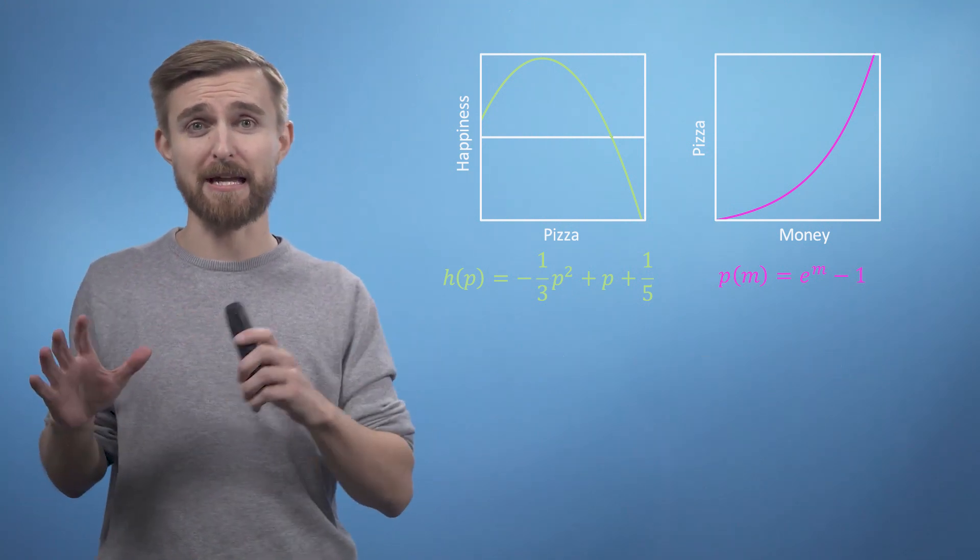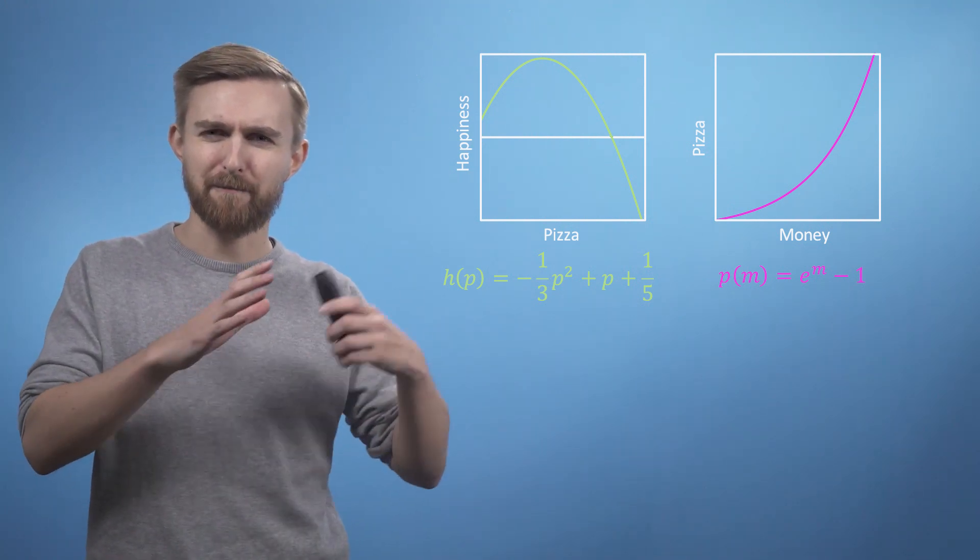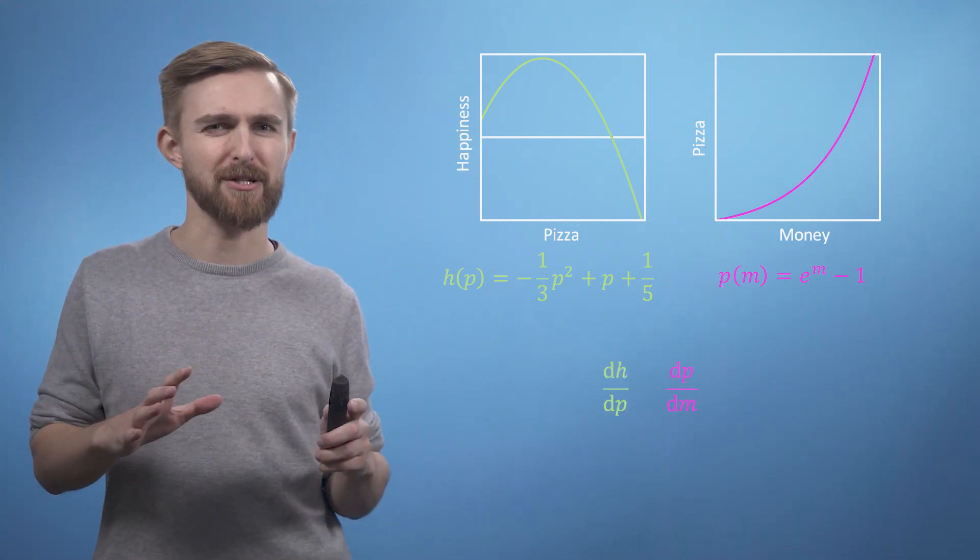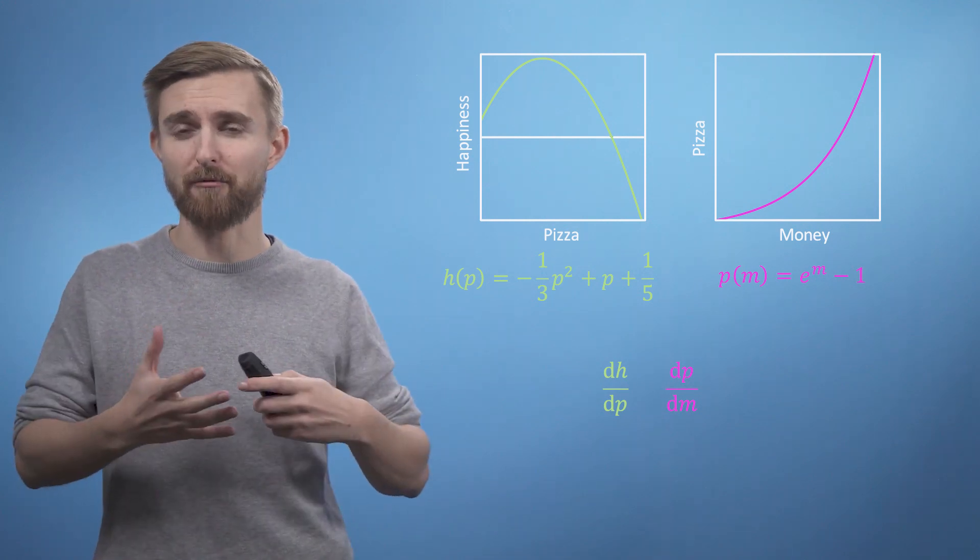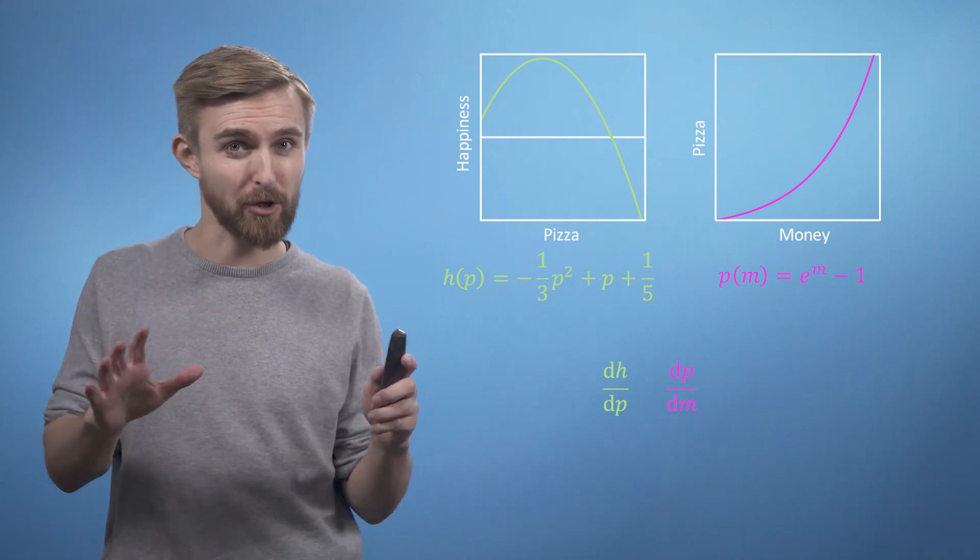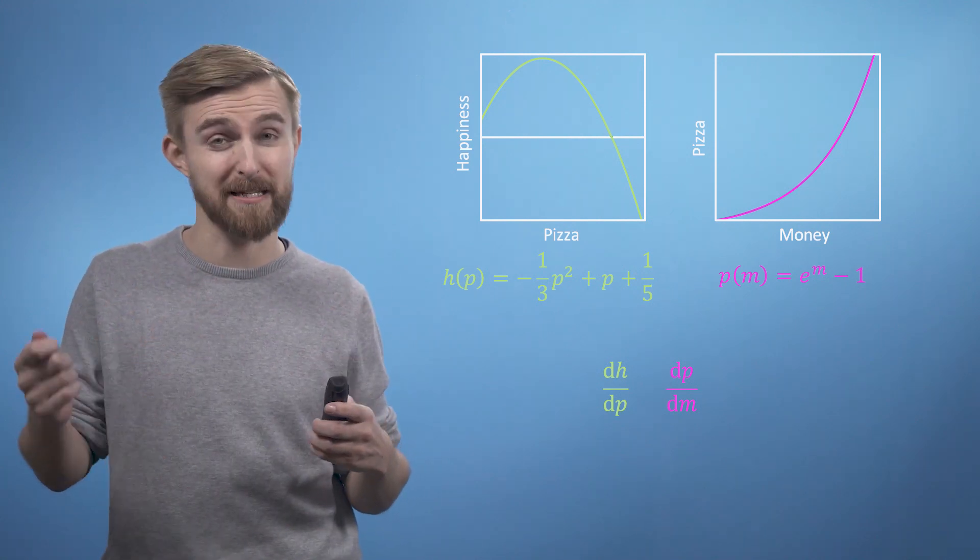Consider the derivative of H with respect to P, and of P with respect to M. You'll notice that in this particular notation convention, where the derivatives are represented by quotients, the product of these two quantities looks like it would give you the desired function, DH by DM.